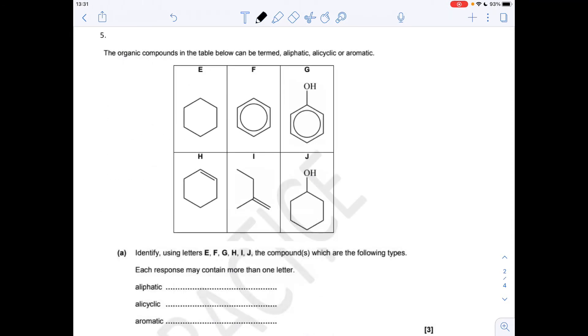Question 5, so which of the molecules are aliphatic, which ones are alicyclic, which ones are aromatic? Okay, so aliphatic first. If it's got a benzene ring, it's not aliphatic. If it hasn't got one, it is, so these are all aliphatic.